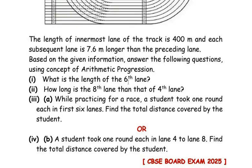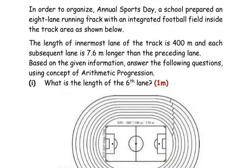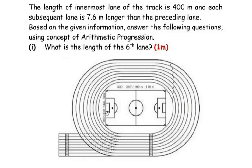Let us start with the first question. In order to organize annual sports day, a school prepared an 8-lane running track with an integrated football field inside the track. The length of the innermost lane is 400m and each subsequent lane is 7.6m longer than its preceding lane. What is the length of the 6th lane?